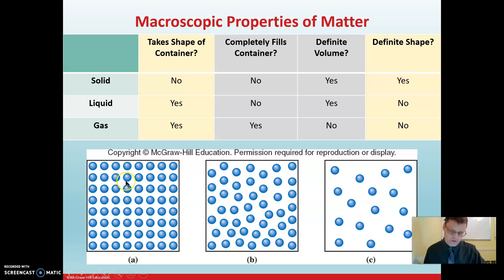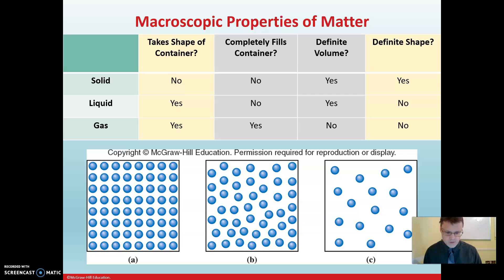What kind of influences these macroscopic properties are some of the things that are happening at the molecular level. At the molecular level, solids tend to be very ordered and the molecules tend to be very close to each other. As we move to the liquid and then the gas phases of substances, they're less ordered and there's more space between the molecules.